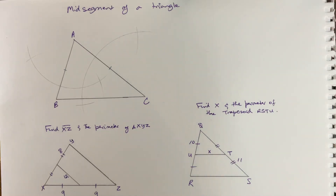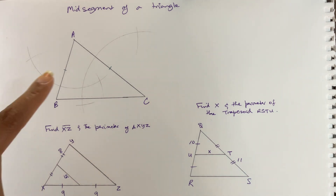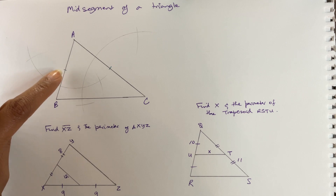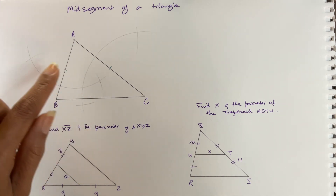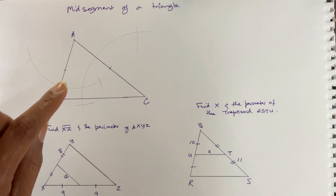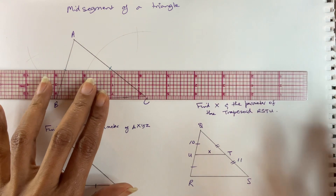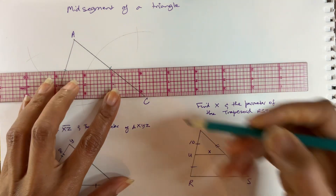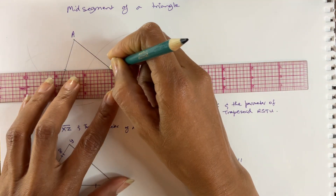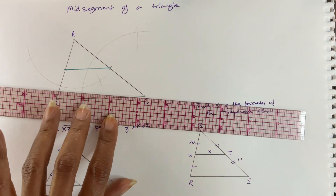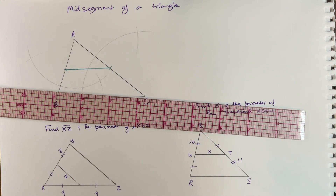Welcome back everyone to my tutorial. In this lesson today I am going to talk about the mid-segment of a triangle. If you have a triangle and you have found the midpoint of two of the segments, and then you connect that line from one midpoint to the other midpoint, then this is what we call our mid-segment. The mid-segment of a triangle is simply the segment that connects the midpoint of two sides of a triangle.